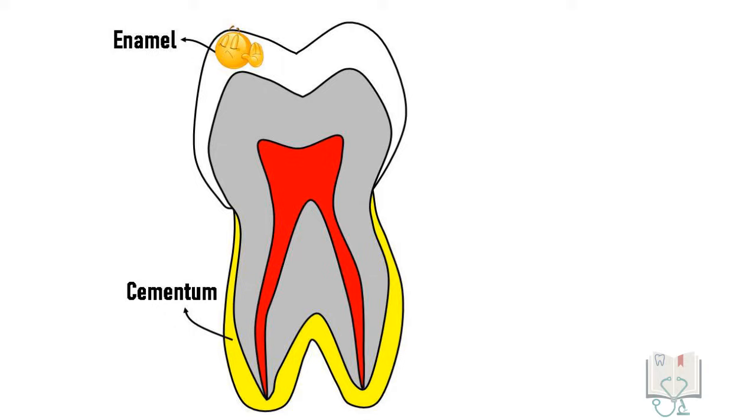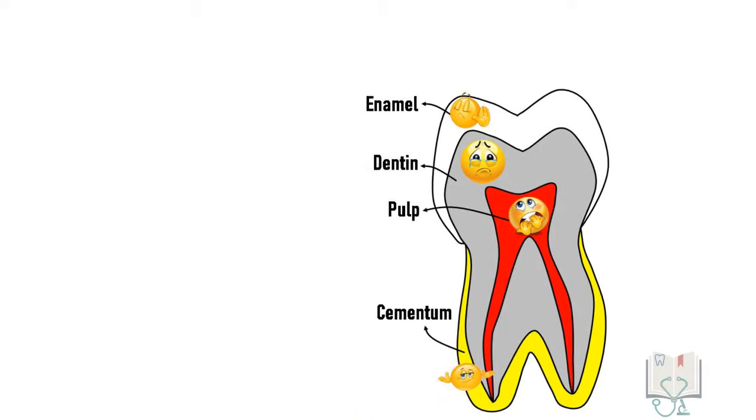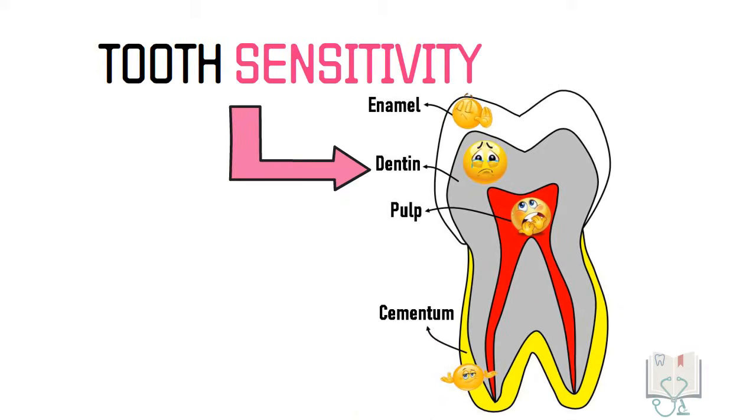Similarly, cementum lacks any neural tissue, so does not cause any sensation or pain. However, dental pulp is a vital soft tissue full of nerves and can elicit pain called pulpal pain. So dentin is the only dental tissue associated with tooth sensitivity.